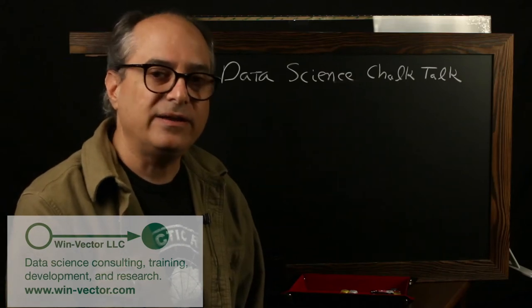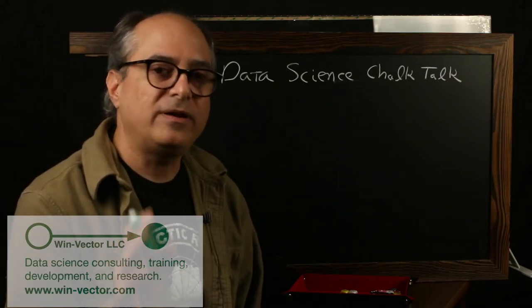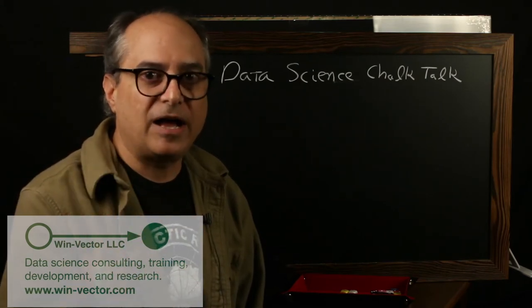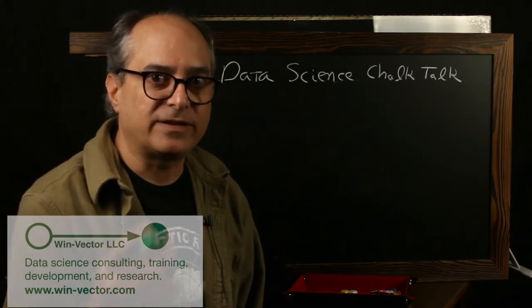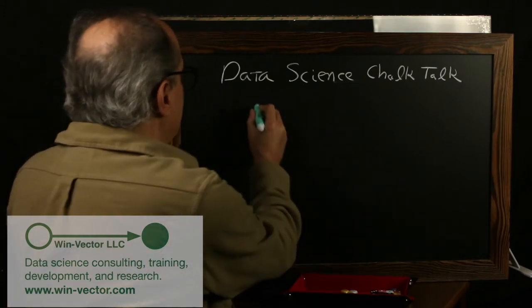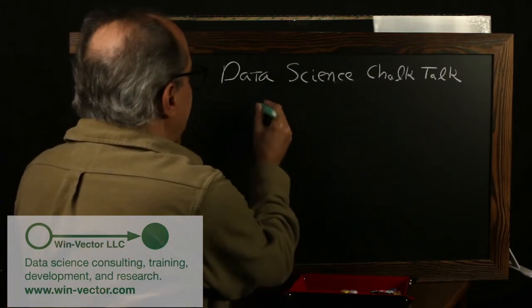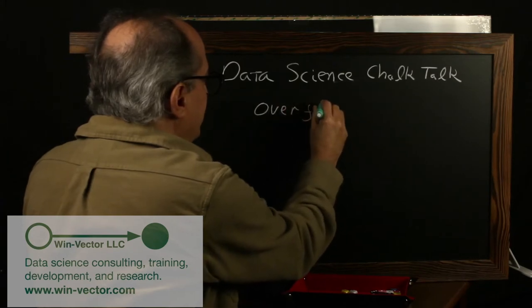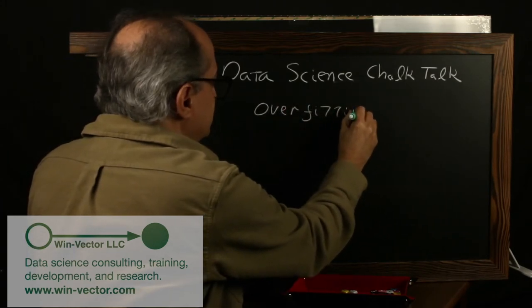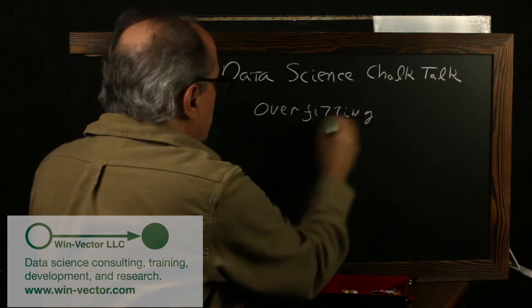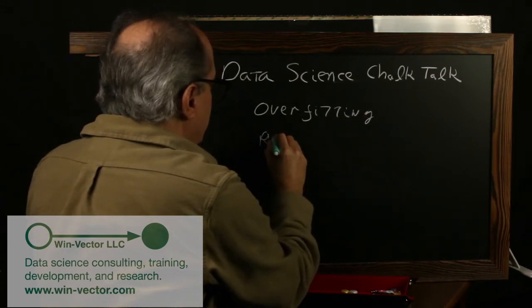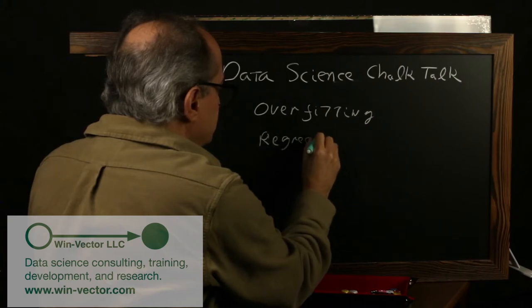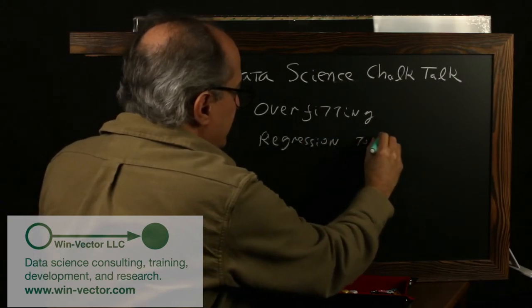Hi. I'd like to talk about an important data science topic, a pathology or probably the biggest blocker to success in data science projects in production. And it is overfitting or regression to mediocrity.